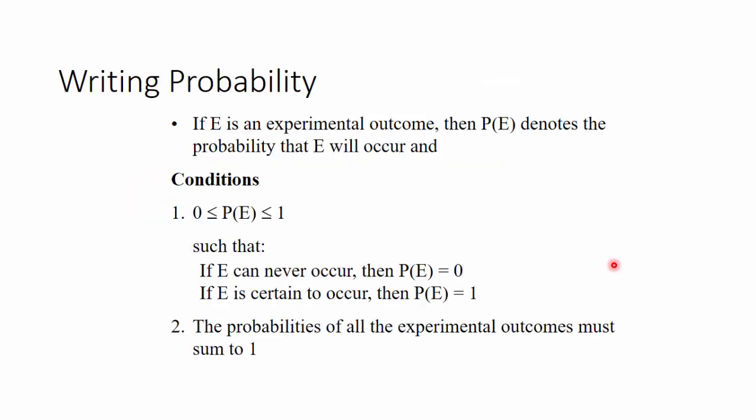How do we write probability? Conditions of writing probability: If E is an experimental outcome—that's E constitutes picking a student with first name Ratha—then P(E) denotes the probability E will occur. The probability of picking a student with first name Ratha.